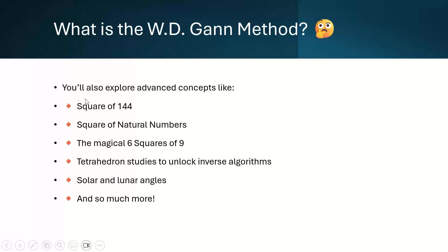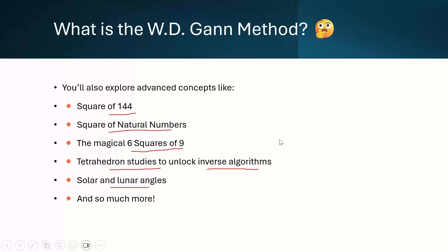Coming to the advanced concept of W.D. Gann — which includes Square of 144, known as the Jupiter cycle, then Square of Natural Numbers, then Six Square of 9, which is a very magical number arrangement, Tetrahedron study to understand the inverse algorithm, and Solar and Lunar angle, and many more things. These are the advanced concepts of W.D. Gann.